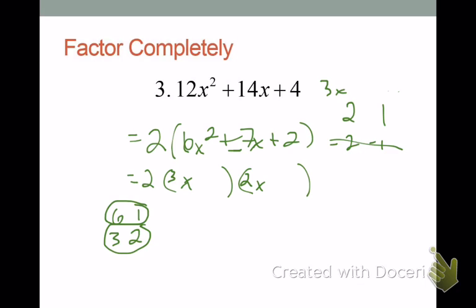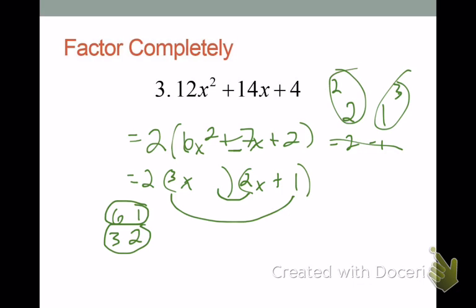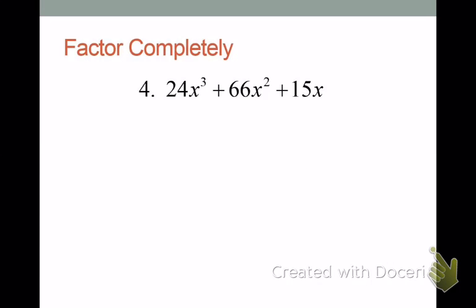Coming back, 3 times 2 is 6, and 2 times 1 is 2 — 6 plus 2 is 8, not what we want. So then we go 2 times 2 and 3 times 1 — that's 4 and 3, which is 7. So I know I have to link my 3 to the plus 1, and my 2 to the 2, using smiles — they need to be on opposite ends. And then we're done. There are a lot of things to keep in mind here.